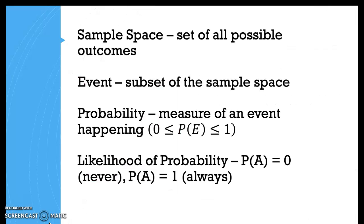Next, we have sample space. This would be the set of all possible outcomes. So when you think about rolling a die or rolling two dice, what are all of the outcomes that could happen? That's the sample space. An event is a subset of the sample space of what could happen.